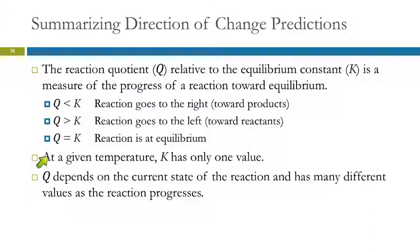So at a given temperature, the equilibrium constant has one value. But the reaction quotient can have many values. It depends on the current state of the reaction. And as it progresses towards equilibrium, it's going to get closer and closer to the equilibrium constant.